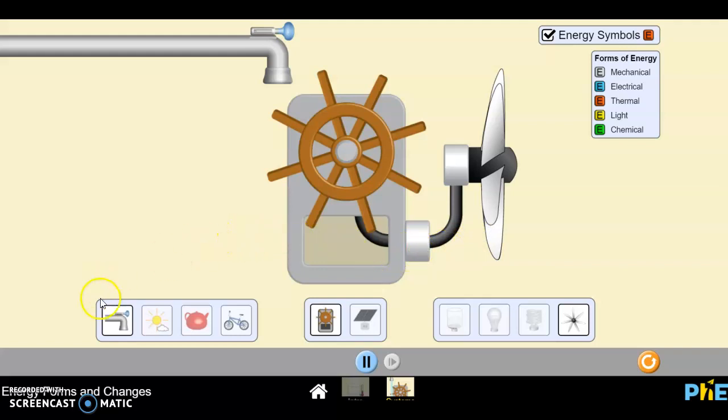Systems has a variety of choices for you, and the first thing I would do is click on Energy Symbols, and that way you can see the gray is going to be mechanical, the blue is electrical, the red is for thermal or heat, the yellow is for light, and the E is for chemical, all of the forms of energy that we should be familiar with now.